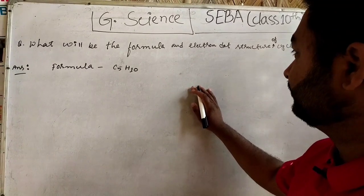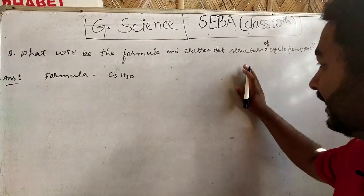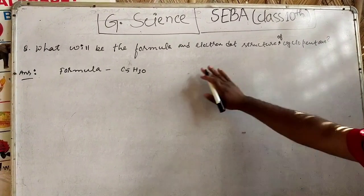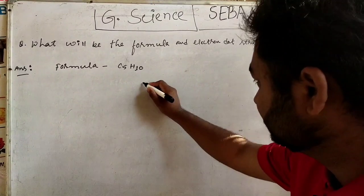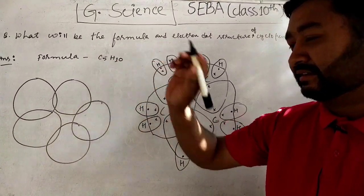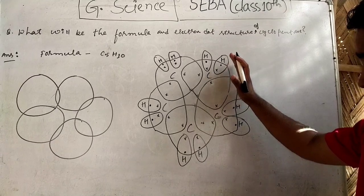The formula of cyclopentane - actually pentane means five - so the formula of cyclopentane is C5H10. And its structure, since it is cyclo, the formula is C5H10 and the structure is...